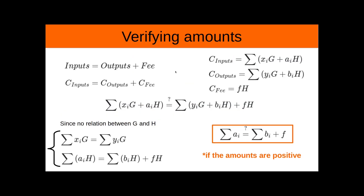But how do we know that the inputs are equal to the outputs plus the fees? What if we try to make the commitment of the inputs equal to the commitment of the outputs plus the commitment of the fees? Let's define the commitment of the inputs as the sum of all the commitments of the inputs, since we can sum the different terms.